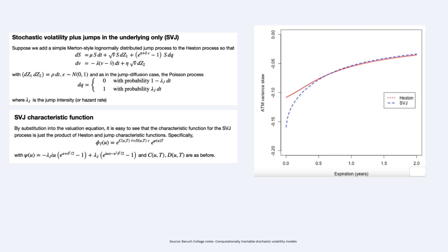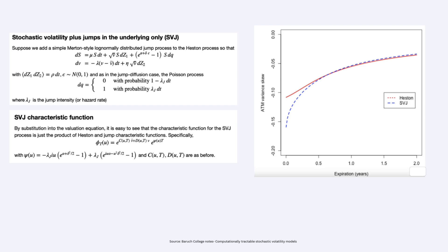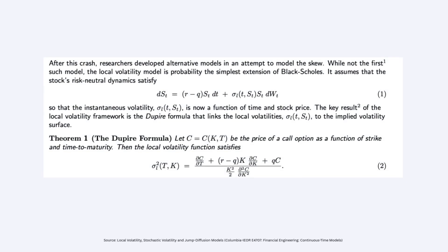The SVJ (Stochastic Volatility with Jumps) model combines stochastic volatility with sudden jumps in asset prices, capturing both continuous market fluctuations and abrupt movements. It is useful for pricing options and managing risk in markets prone to sudden shocks. Local volatility models assume that volatility is a deterministic function of the current asset price and time, allowing exact calibration to observed market prices of vanilla options and are particularly used for pricing exotic options.